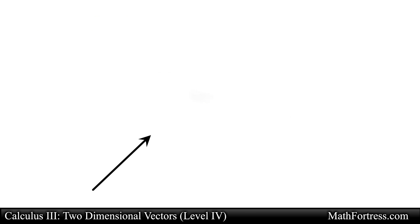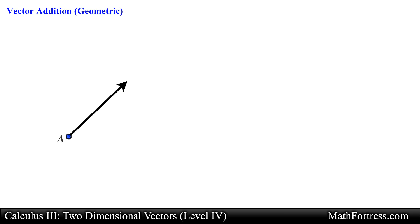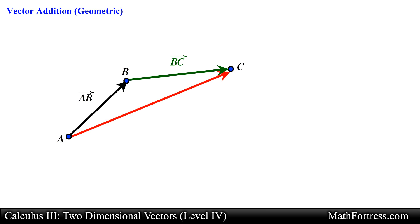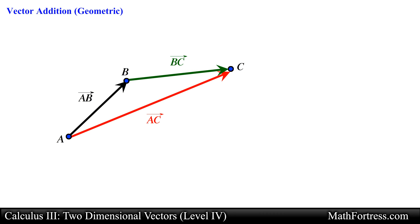Now let's think about a different scenario. Say that a particle moves from point A to point B. Then the particle changes direction and moves from point B to point C with position vector BC. The combined effect of these movements is that the particle has moved from point A to point C. We can represent this movement by drawing a vector from point A ending at point C. The displacement vector AC is essentially the sum of vector AB and vector BC, which we mathematically denote as: vector AC equals vector AB plus vector BC.